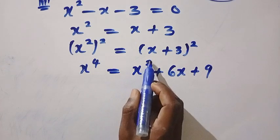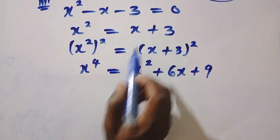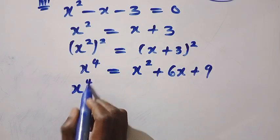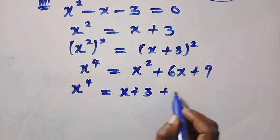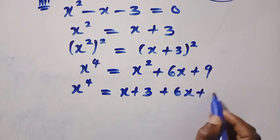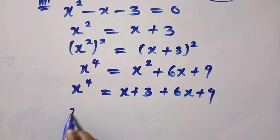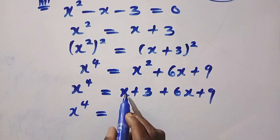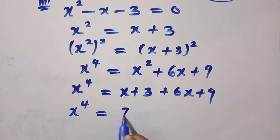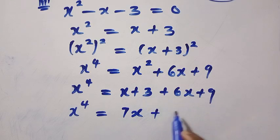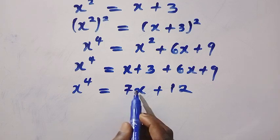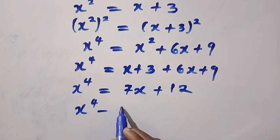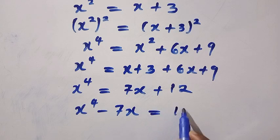Again, x squared is given as x plus 3. By replacing this, we have x to the power of 4 equals, instead of x squared, we change this to x plus 3 plus 6x plus 9. So we have x to the power of 4 equals x plus 6x, which gives us 7x plus 3 plus 9, that is 12. By transferring 7x to the other side, we have x to the power of 4 minus 7x equals 12.